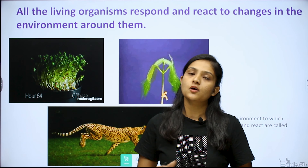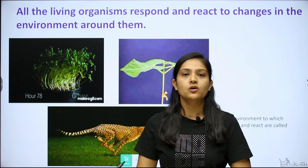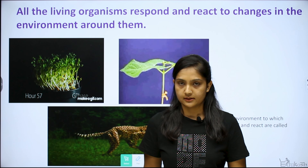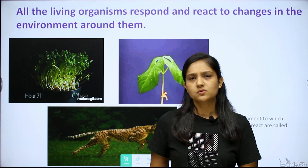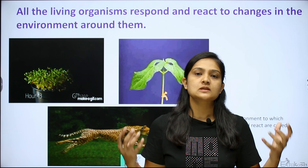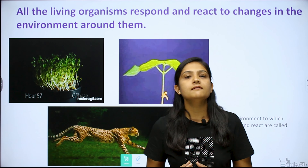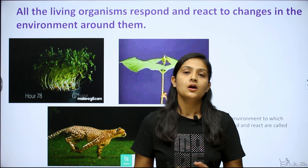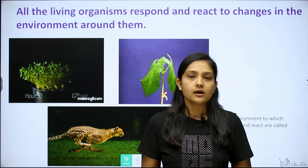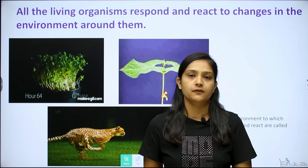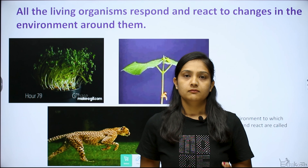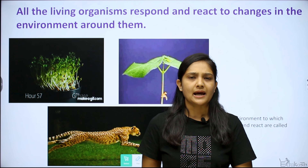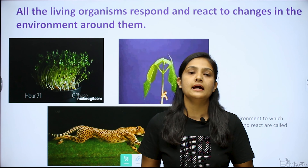Animals can move from one place to another, so they react and respond against stimuli. What is stimuli? The surrounding environment of any living organism changes, and that change acts as a stimuli. Examples of stimuli include light, water, air, temperature, and pressure.